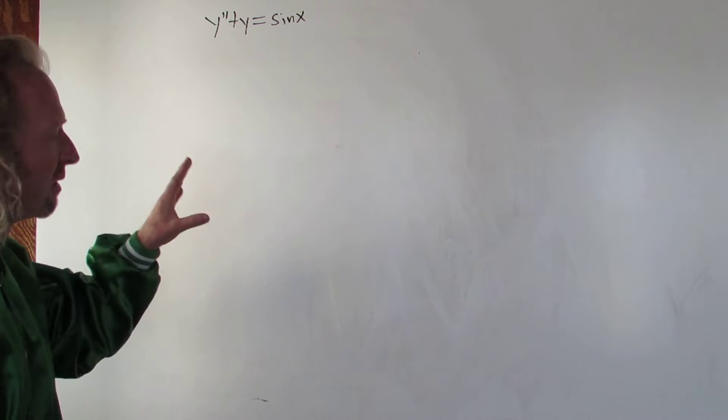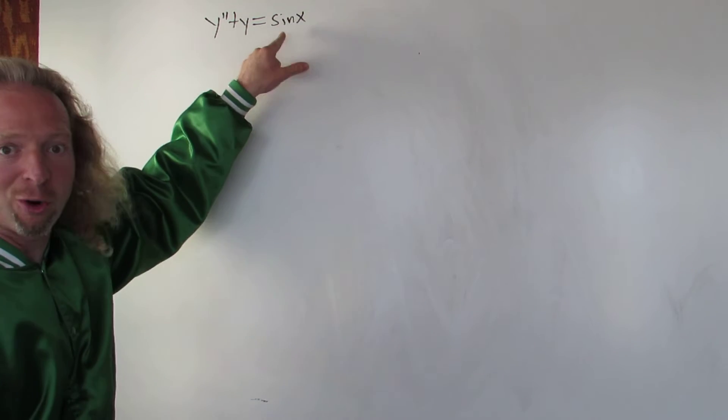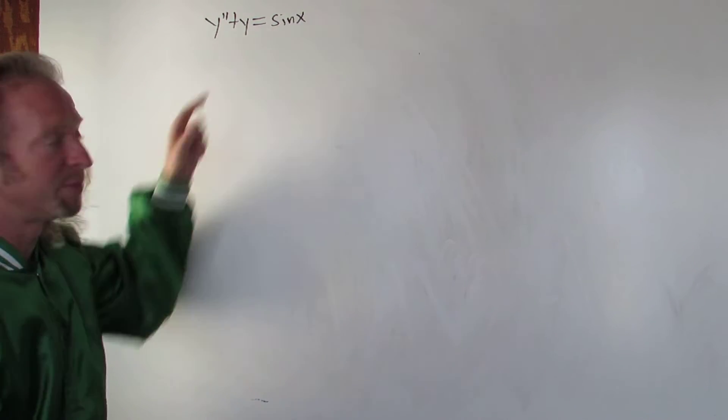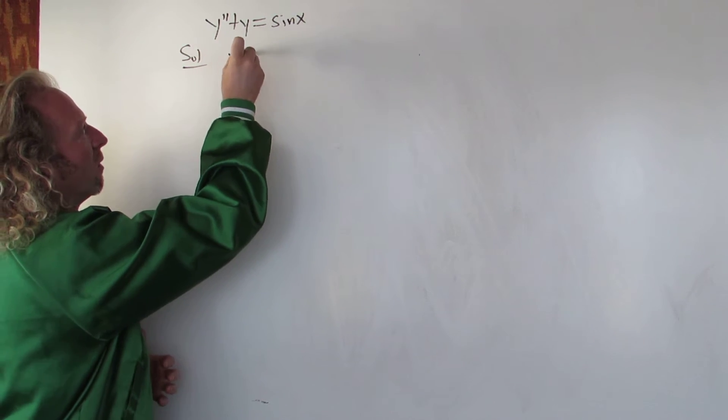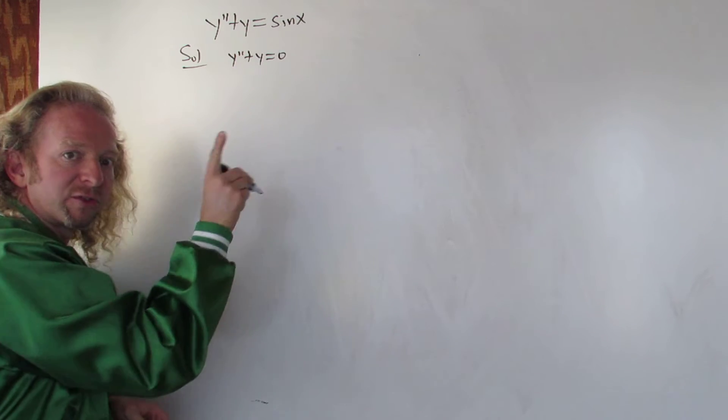So variation of parameters says the first thing you do is you solve the homogeneous equation. We start by pretending it's equal to zero. So we solve this first.